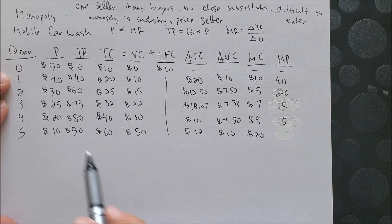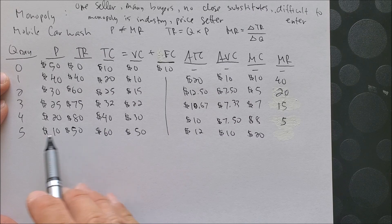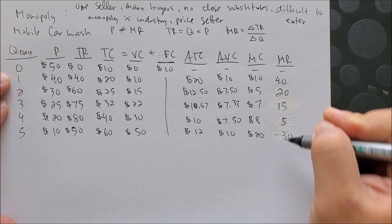And last but not least, we have 50 minus 80, that's negative 30, over 5 minus 4, that's 1, to give us negative 30.